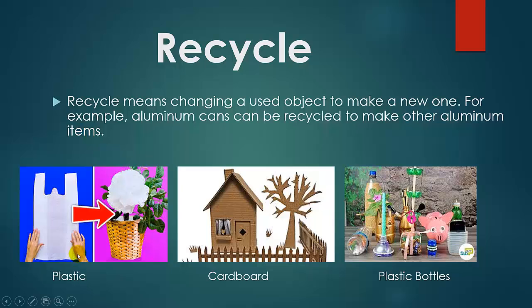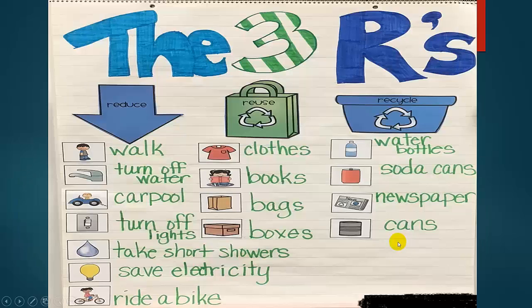Look at this one. Plastic — we can use plastic bags to make new things. Cardboard — we can also use cardboard to make new ones. Plastic bottles — there are different kinds of bottles that can be made into new shapes.